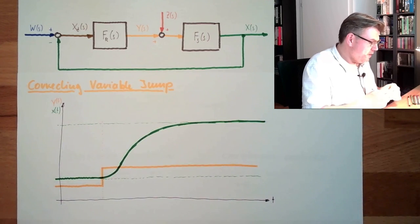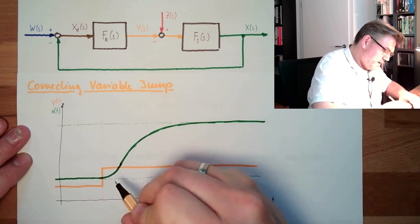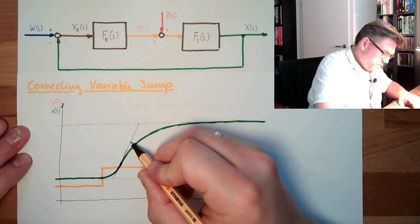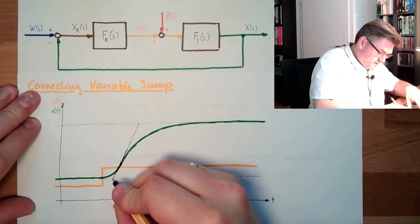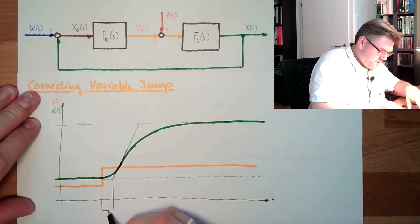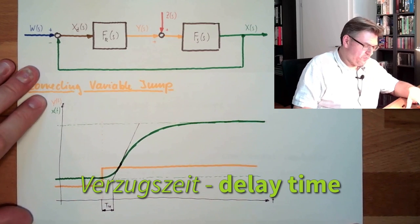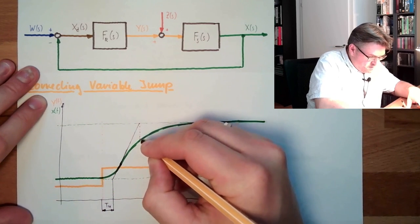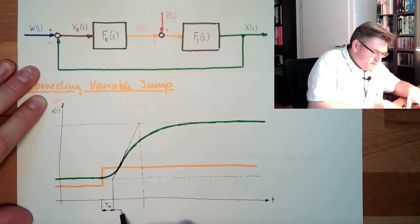What we are going to look at now is the inflection point — the point where the steepness changes. We use a tangent at the inflection point, called the inflection tangent. We can now measure some times: one time here is called Tu, the delay time — Verzugszeit in German. And here this is called Tg.